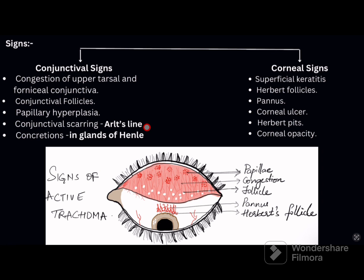Concretions are hard-looking whitish deposits, ranging from pinpoint to 2 mm in size. They are non-calcareous deposits formed due to accumulation of dead epithelial cells and inspissated mucus in depressions called glands of Henle. So conjunctival signs are: congestion of upper tarsal and fornicial conjunctiva, conjunctival follicles, papillary hyperplasia, conjunctival scarring (Arlt's line), and concretions.